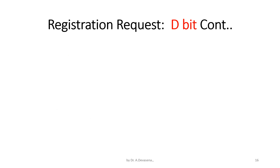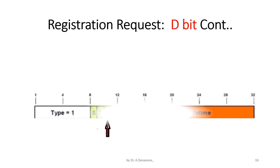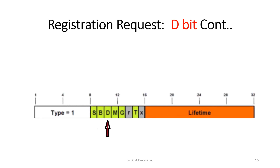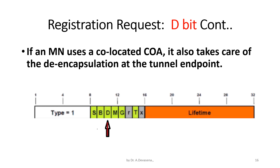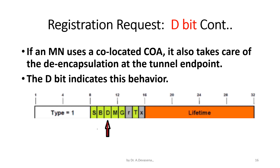The D-bit field is present in the registration request, as indicated by the arrow mark. If a mobile node uses a co-located COA, it also takes care of the de-encapsulation at the tunnel endpoint. The D-bit indicates this de-encapsulation behavior.